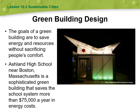We can also design individual buildings to be more environmentally friendly. The goal of green building is to save energy and resources without sacrificing comfort. With new technologies, we can do both. For example, Ashland High School in Massachusetts renovated their building with solar panels, automatic lights that turn off when rooms are empty — similar to what we have at GHS — and systems that detect occupancy to adjust air conditioning and heat. Overall, this saves the school district $75,000 a year, which can go toward other resources.